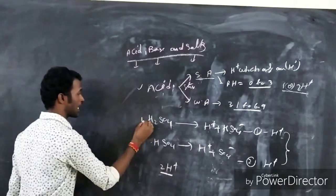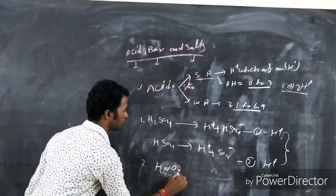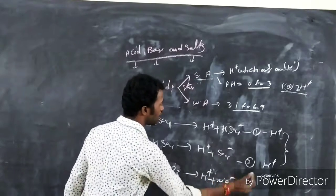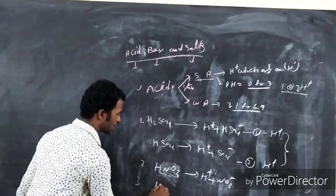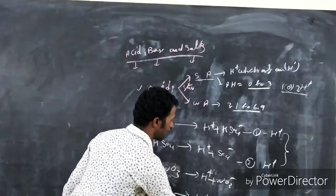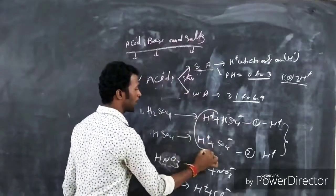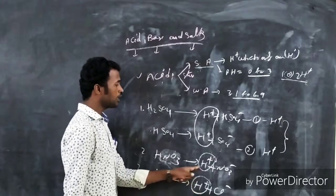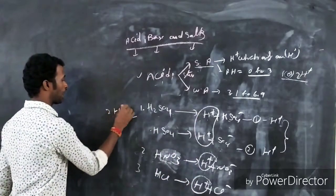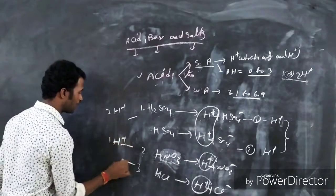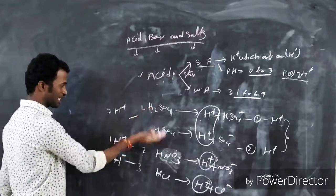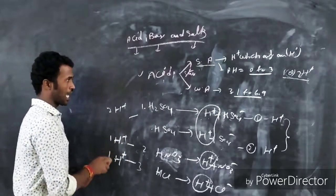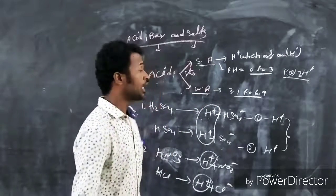The second strong acid is HNO3, nitric acid. By electrolysis, it releases 1 hydrogen ion (H+) and NO3-. The third acid is HCl, hydrochloric acid, which releases H+ and Cl-. Comparing: sulfuric acid releases 2 hydrogen ions, nitric acid releases 1, and hydrochloric acid releases 1. Acids that release 1 or 2 hydrogen ions are called strong acids. We will discuss weak acids next time.